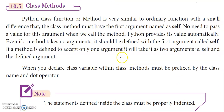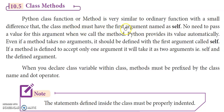Coming to class methods: a class method is like an ordinary Python function, but when a function is defined inside a class, we call it a class method. The key difference is that every class method should have self as the first argument. Self is the first parameter of any class method.